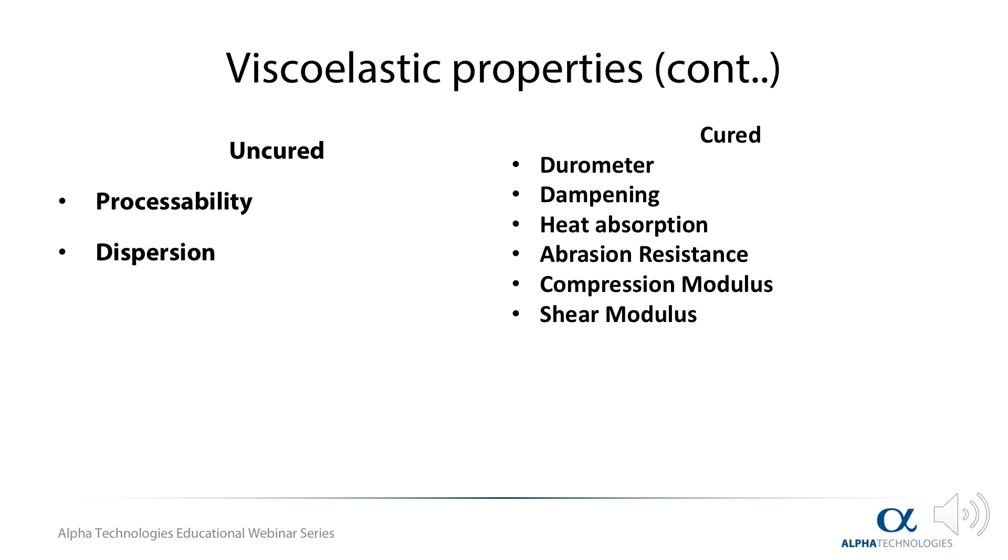Applying the knowledge of viscoelastic modeling, it is possible to directly calculate a number of material properties based on the torque signal measured by the RPA. This includes properties of both uncured and cured material, many of which are listed above.